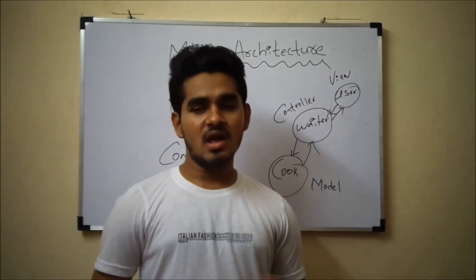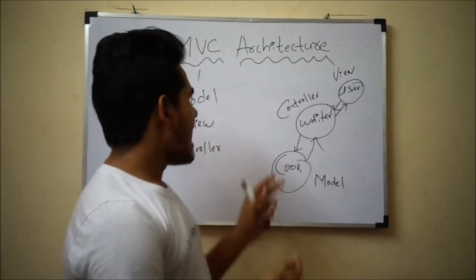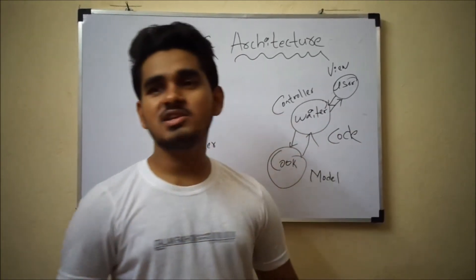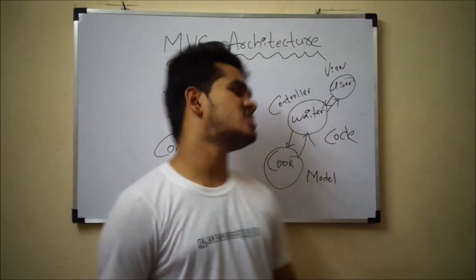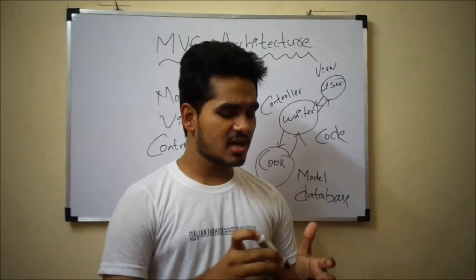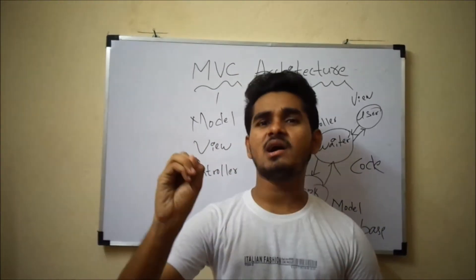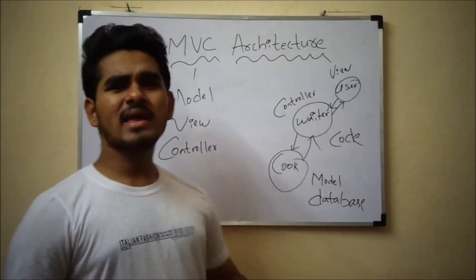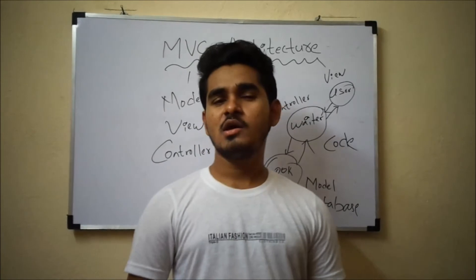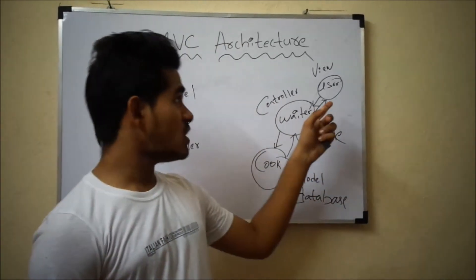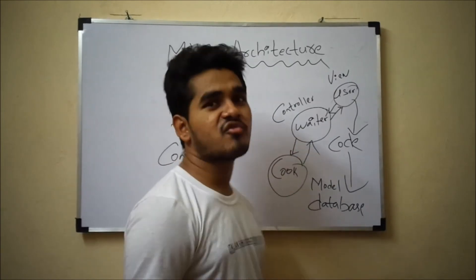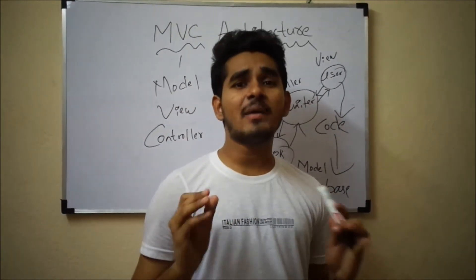The View is nothing but the user — that means we are the users of a particular website. The Controller is nothing but software code — you write code to perform a particular operation. The Model is nothing but the database, which can store all the data. So when the user requires some data from the web application, the Controller performs that task. The Controller is software code used to extract data from the database.